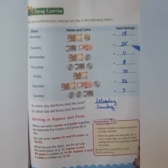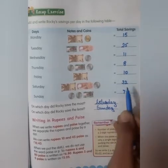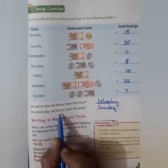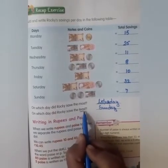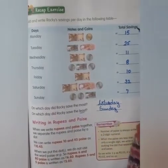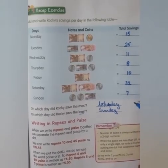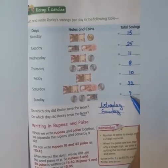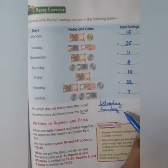On which day did Rocky save the most? Look at the picture — on Saturday he saved 32 rupees, which is the most. On which day did Rocky save the least? Look at the table — on Sunday he saved the least money, rupees 7.